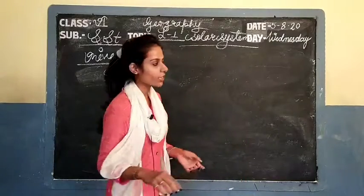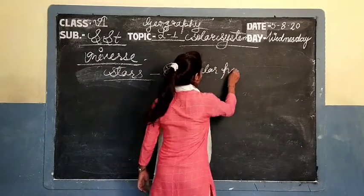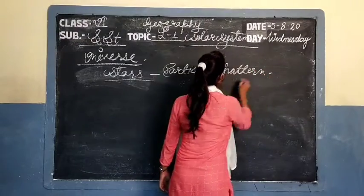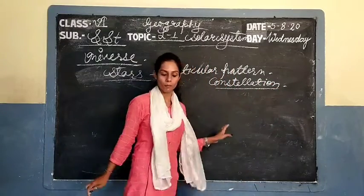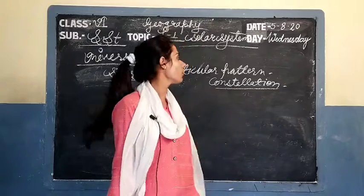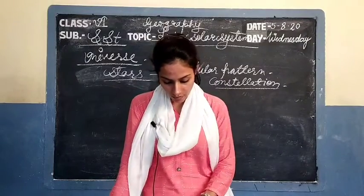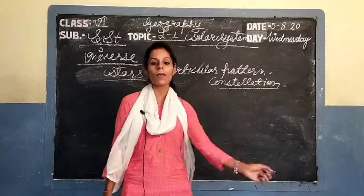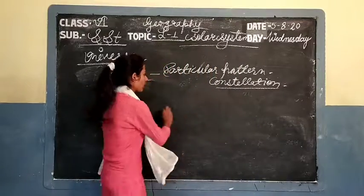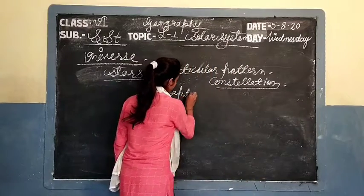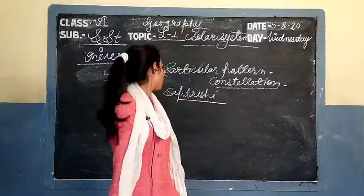The group of stars forming a particular pattern is called a constellation. One such constellation is a group of seven stars which is called the Saptarishi. Usme total seven stars hain, usko Saptarishi ke naam se bolte hain.